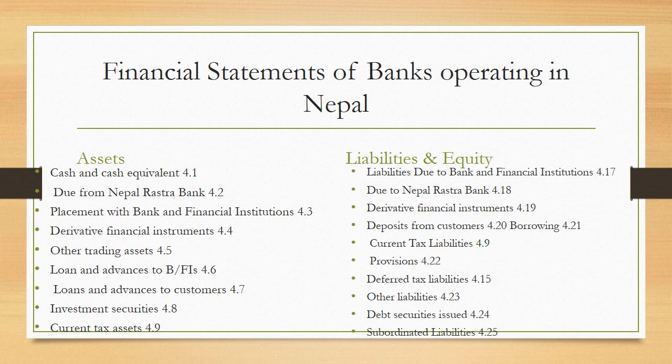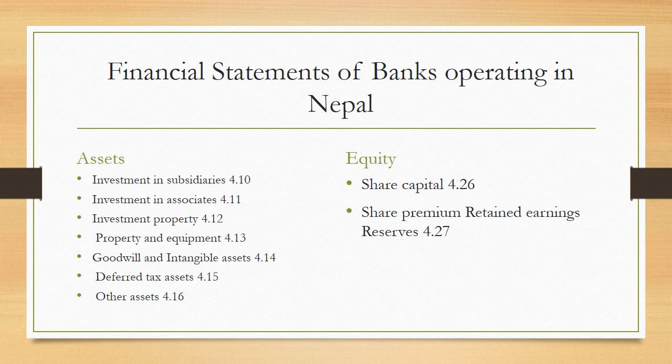On the liability and equity side, liabilities include: due to banks and financial institutions, due to Nepal Rastra Bank, derivative financial instruments, deposits from customers, borrowings, current tax liabilities, provisions, deferred tax liabilities, other liabilities, debt securities issued, and subordinate liabilities. Non-current assets include: investments in subsidiaries, investments in associates, investment property, property and equipment, goodwill and intangible assets, deferred tax assets, and other assets. Equity comprises: share capital, share premium, and retained earnings and reserves. These are the headings of the balance sheet of banks operating in Nepal.